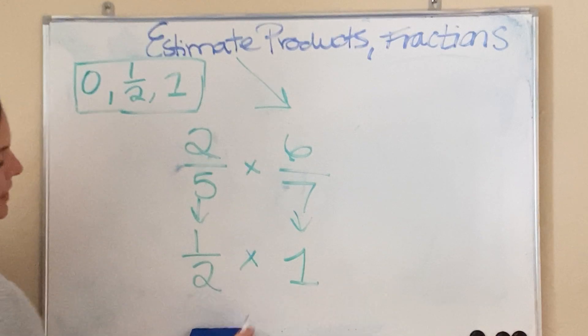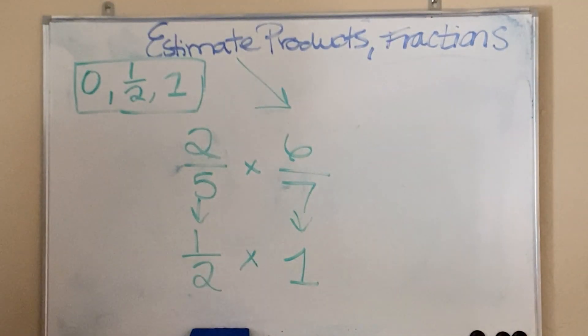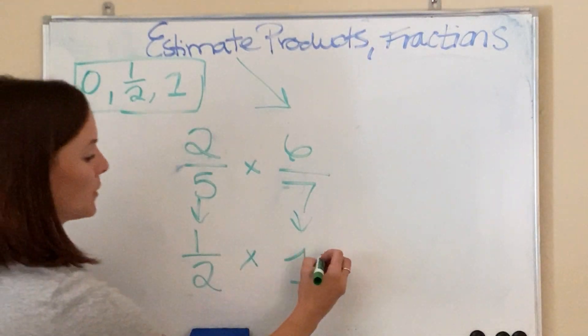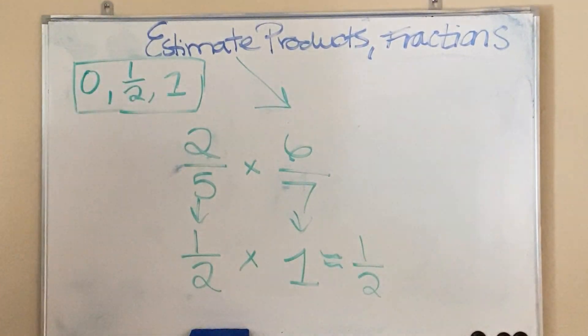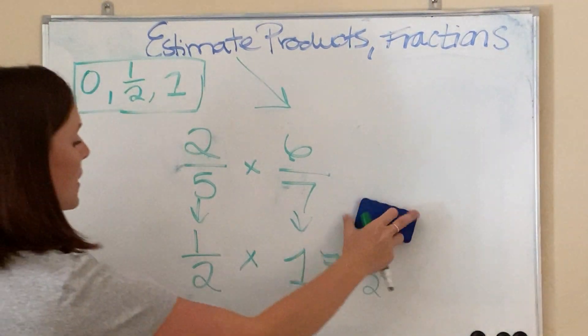So, my new equation is 1/2 times 1. Well, identity property, anything times 1 is itself. So, the answer to this estimated is about 1/2. Let's go ahead and see another one of those.